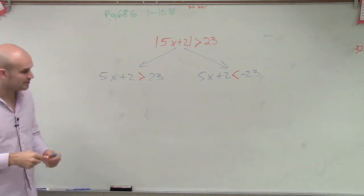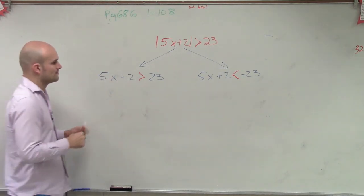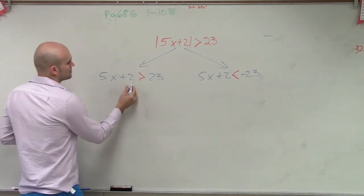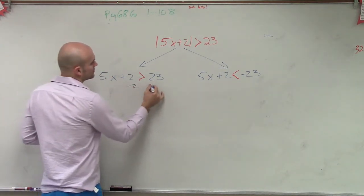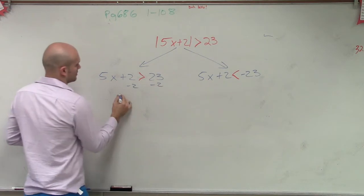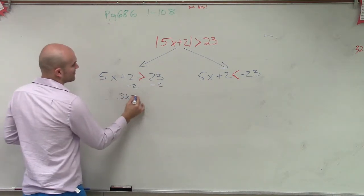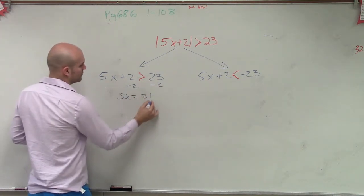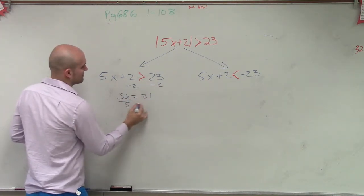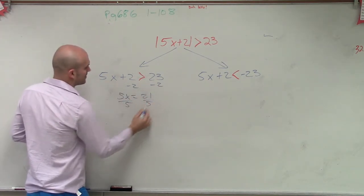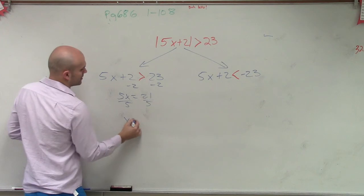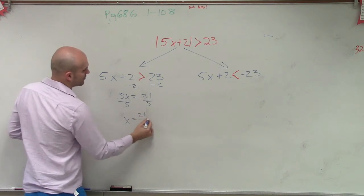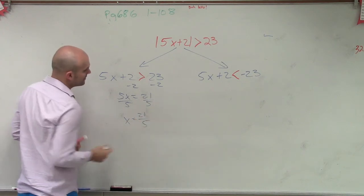Now, all you simply need to do is just solve. So you subtract 2, giving you 5x equals 21. Divide by 5, and x equals 21 over 5.